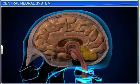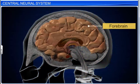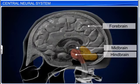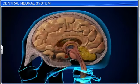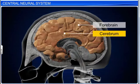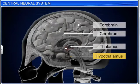The brain can be divided into three main parts: forebrain, midbrain, and hindbrain. The forebrain is the largest part of the brain. It is made up of the cerebrum, thalamus, and hypothalamus.